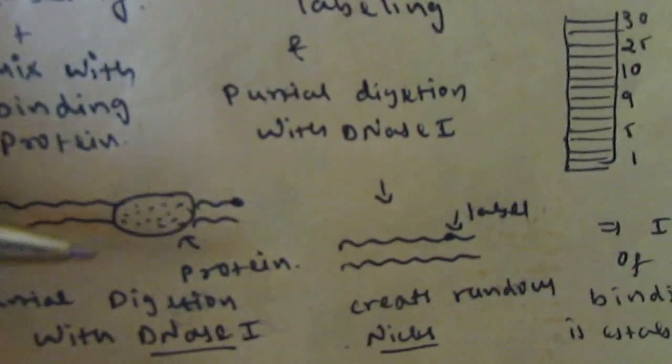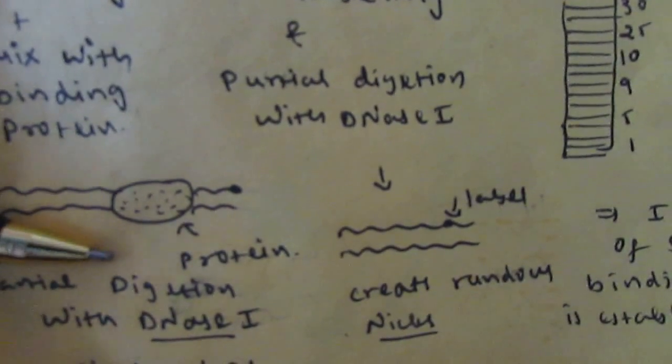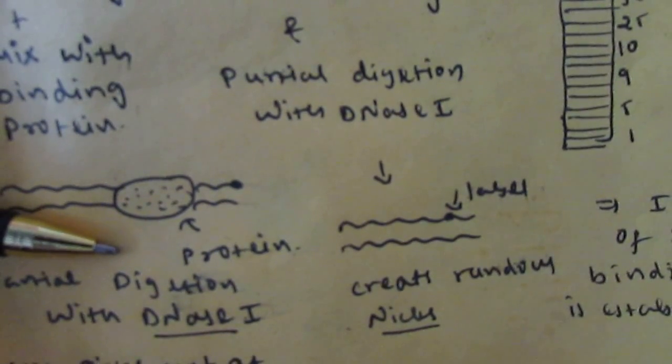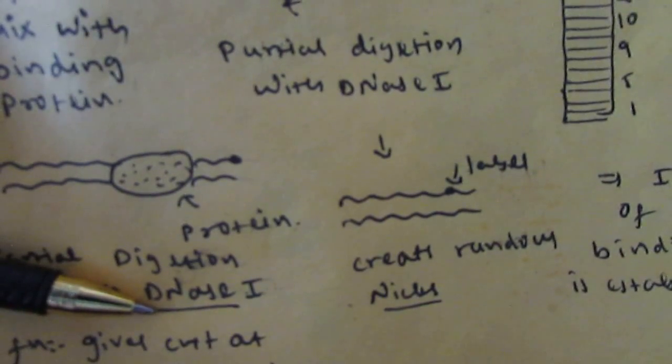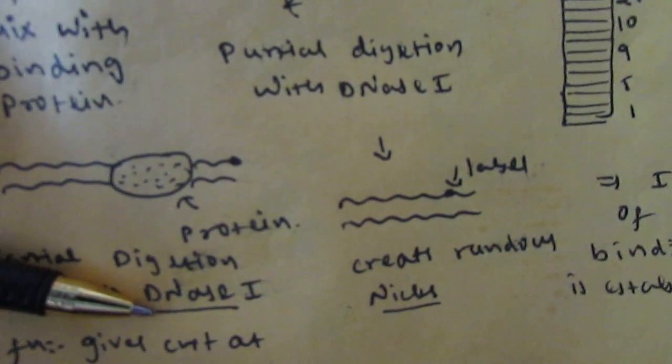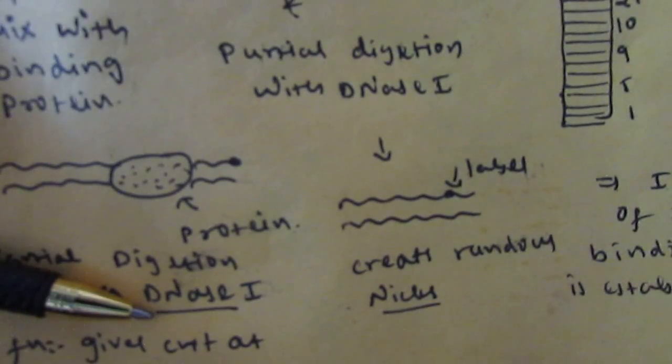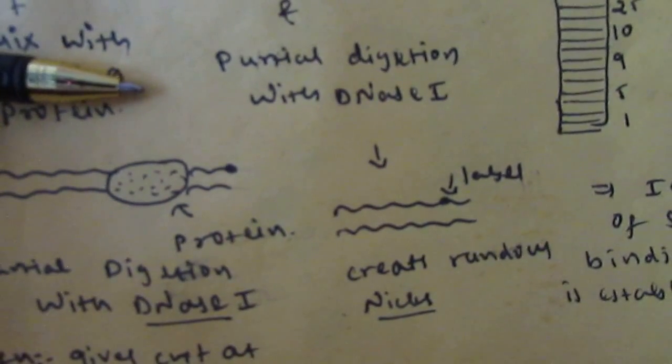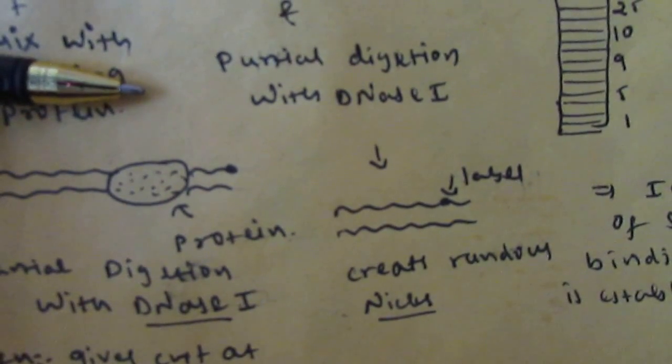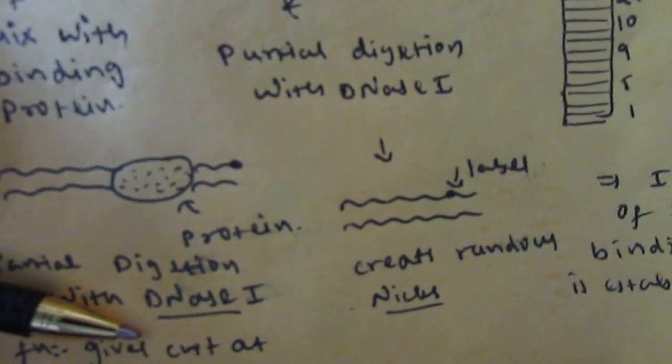It is then partially digested with DNase I enzyme. The mode of action of DNase I enzyme is that it will cut at every phosphodiester bond and create a nick. For example, if this DNA molecule has 30 bases present, then we will get a total of 29 cuts of DNase I endonuclease enzyme.